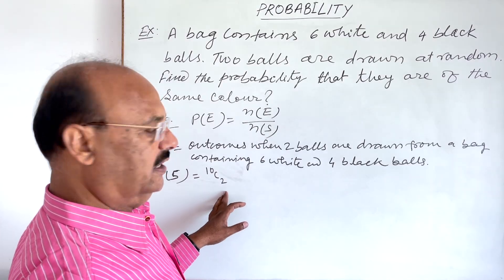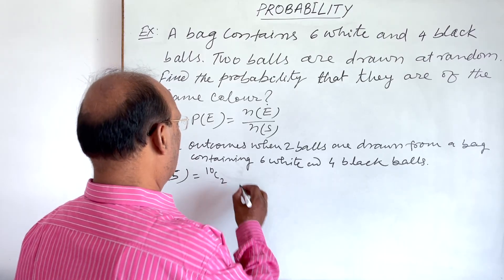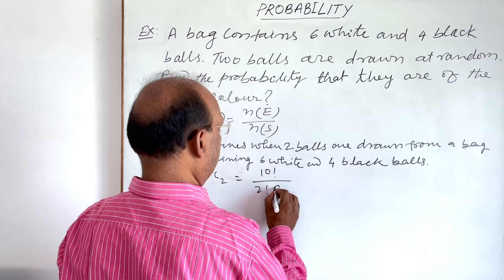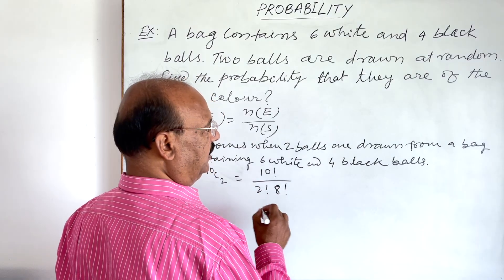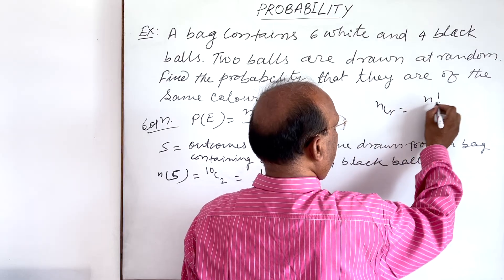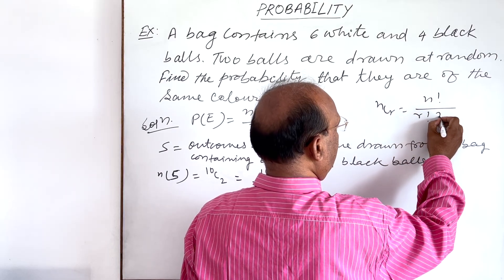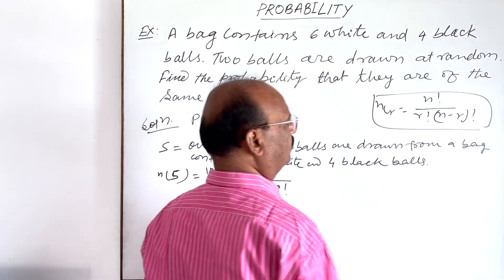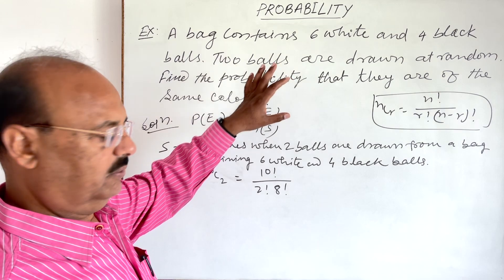That is n(S). Let us evaluate it. This is ten factorial by two factorial into eight factorial. Here we are using the formula nCr is equal to n factorial by r factorial times (n minus r) factorial. This is a very important formula for this topic probability.